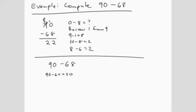90 minus 60 is 30. 30 minus 8 is 22. This took two calculations and no bookkeeping.